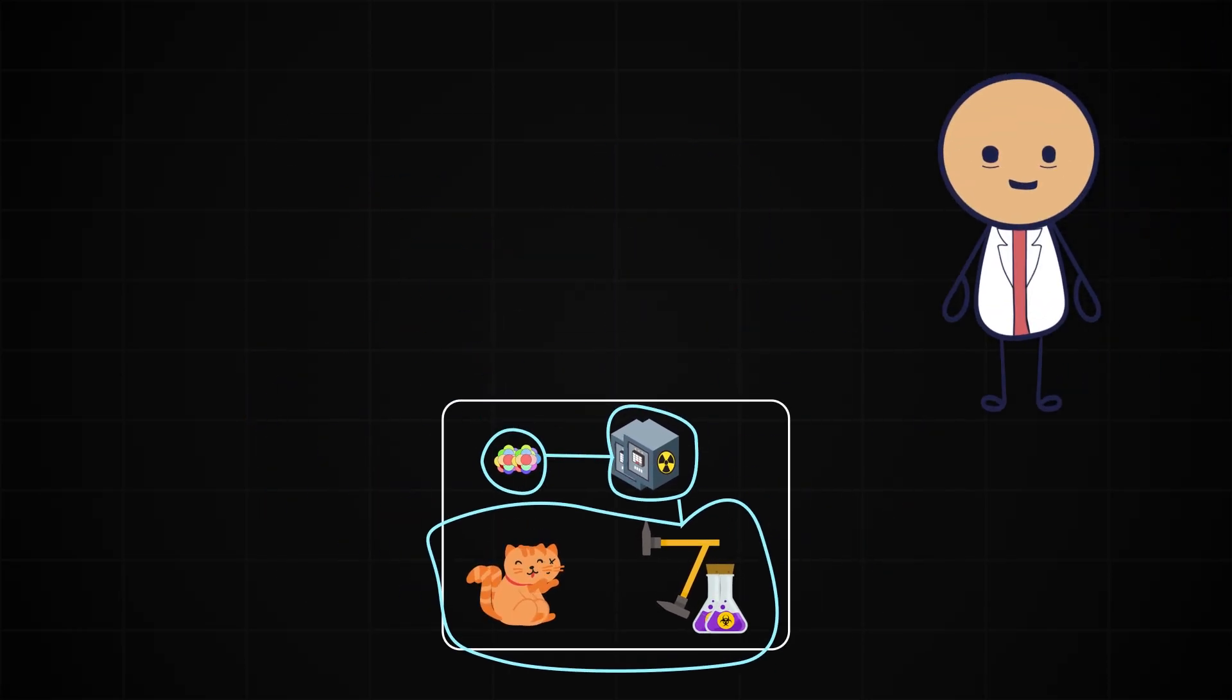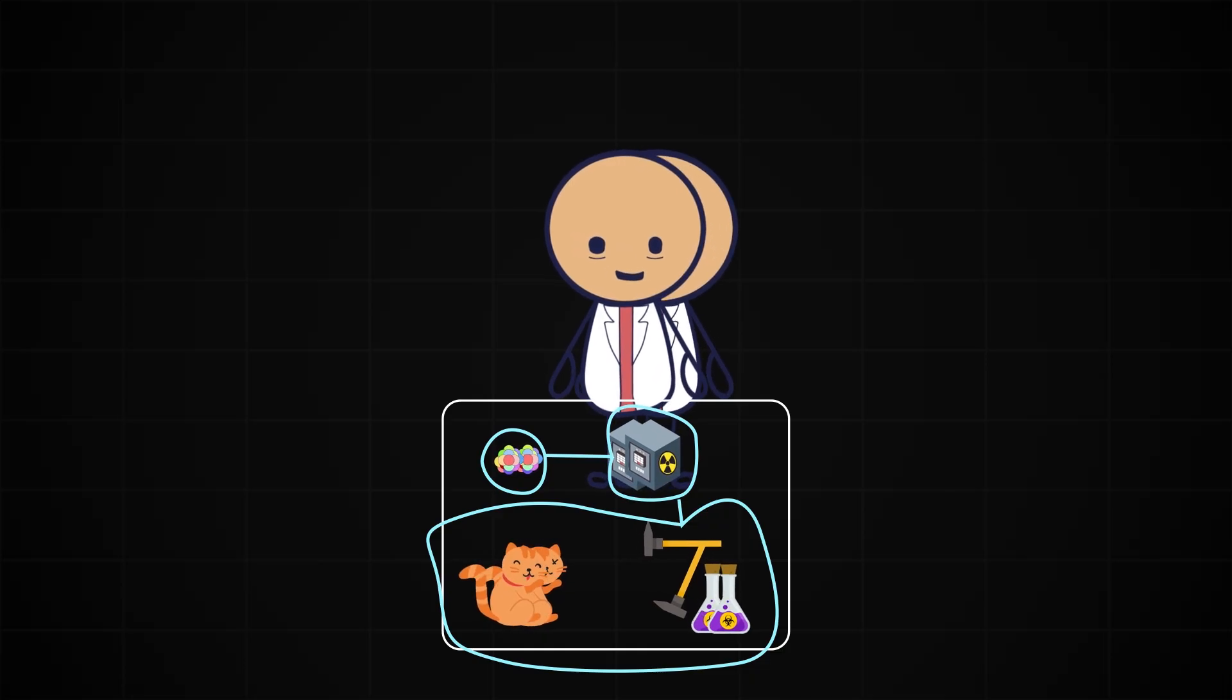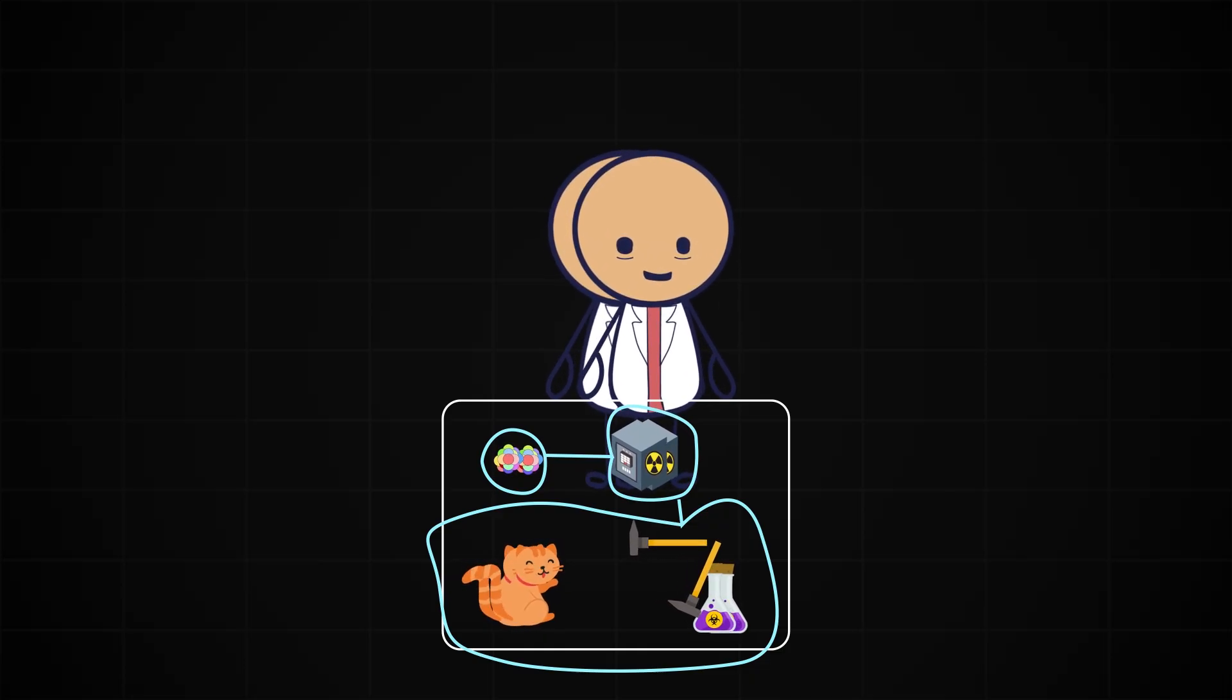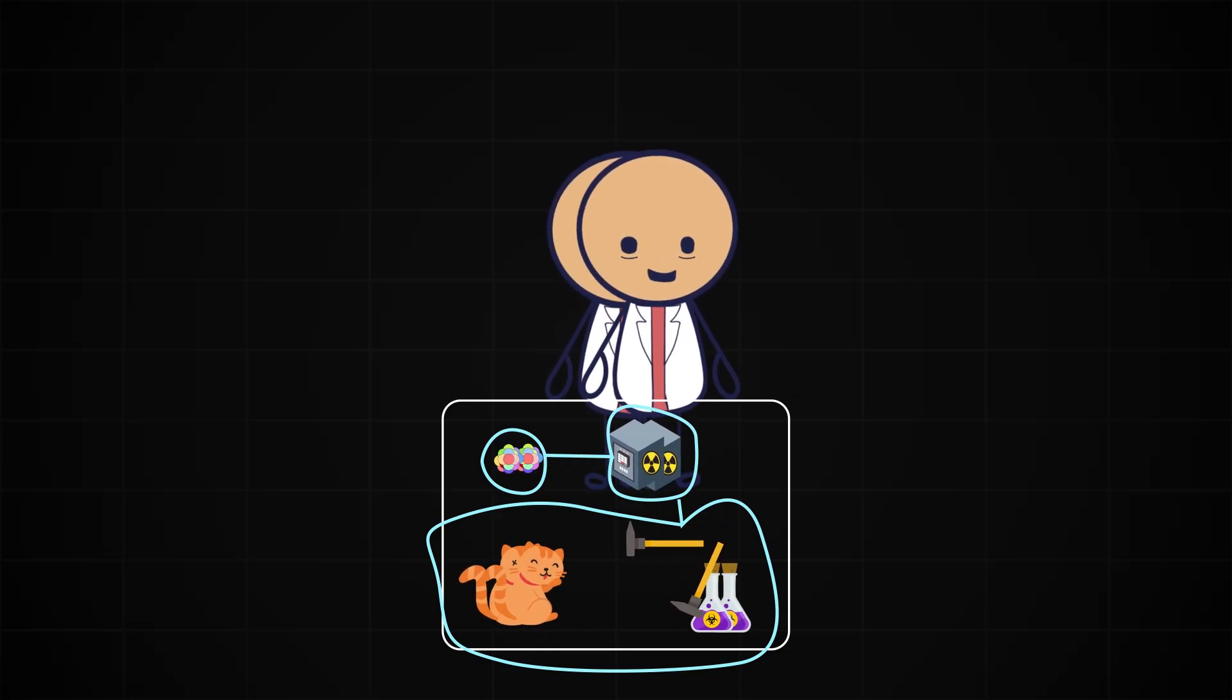But remember, we are also made of atoms and electrons, meaning we too are quantum mechanical. So when we open the box, there is no measurement, no wave function collapse. Instead, we simply become entangled with the state of the box. In other words, we see the cat alive, and we see the cat dead.